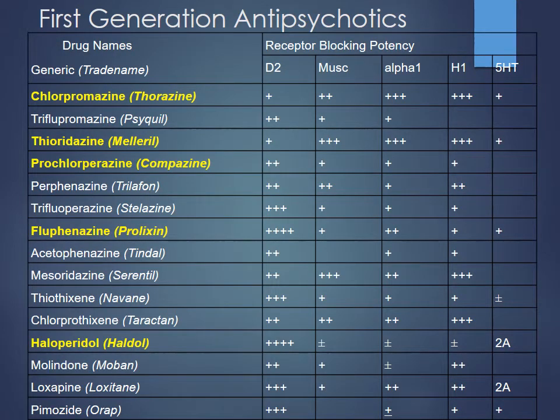Here's the list of first-generation antipsychotics — the highlighted ones are most likely to appear on the test. The key concept is that they have different receptor activity profiles. High-potency D2 blockers are more likely to cause dystonias and NMS — the more D2 blockade, the more those effects. Lower-potency agents that also block muscarinic receptors will blunt some of the acetylcholine increase caused by dopamine blockade, leading to fewer dystonias.